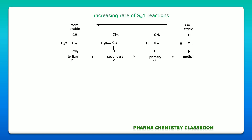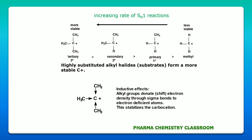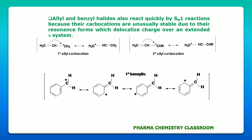Tertiary alkyl halides will be most reactive, then secondary, then primary, then methyl. Tertiary alkyl halides undergo SN1 reaction because they can give a stable carbocation intermediate. The nucleophile then attaches to this stable carbocation to give the product. Tertiary carbocations contain alkyl groups that donate electrons to the charged carbon, reducing the effective charge and increasing stability.